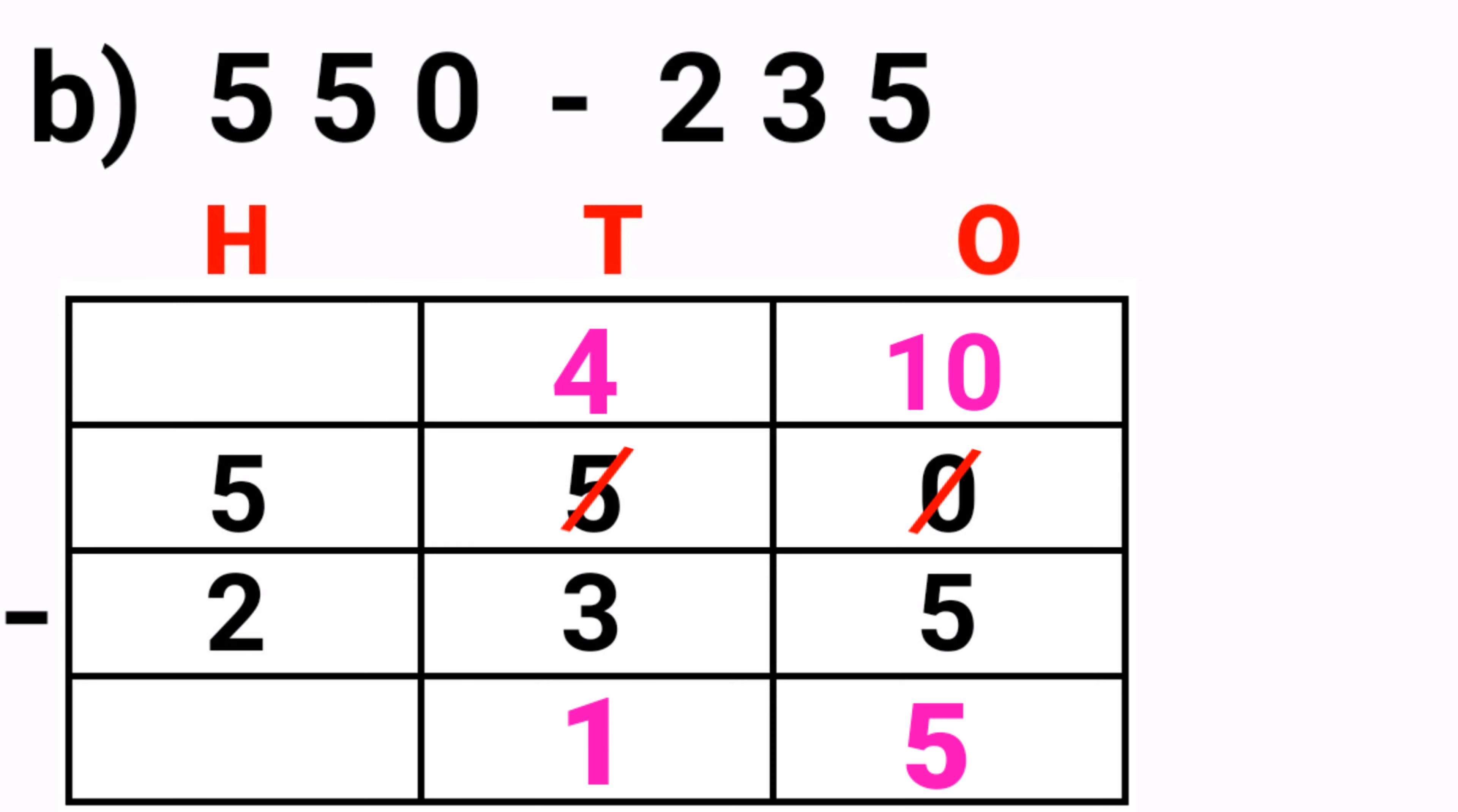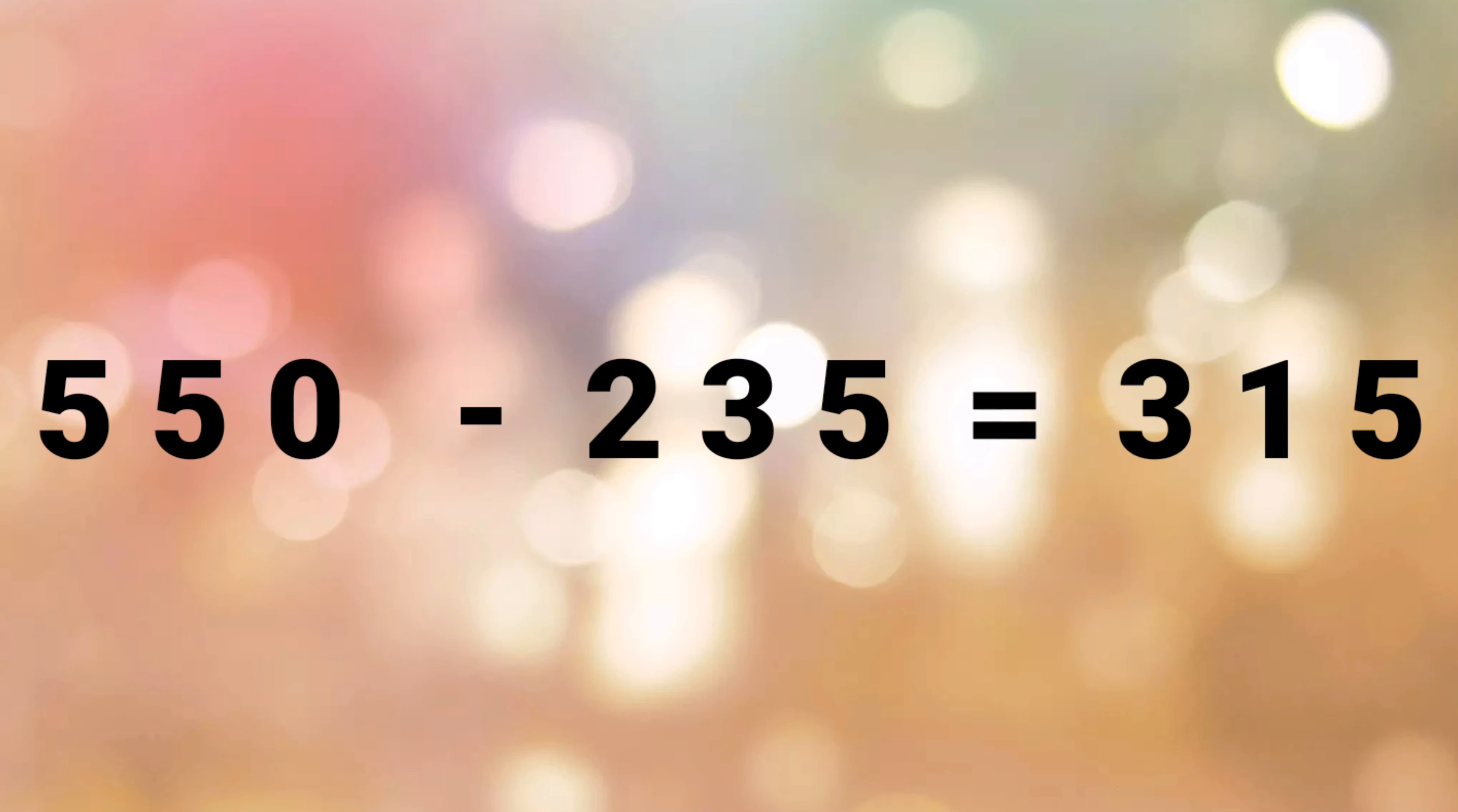The last one is hundreds place: 5 minus 2. We can subtract 5 from 2. So 2 after 3, 4, 5. So the answer is 3. 550 minus 235 is equal to 315.